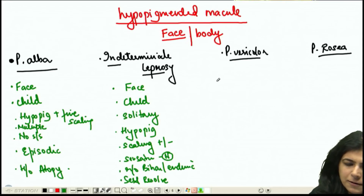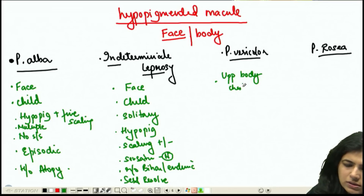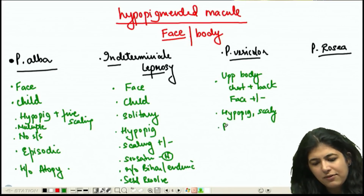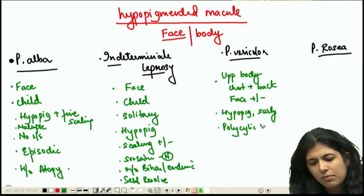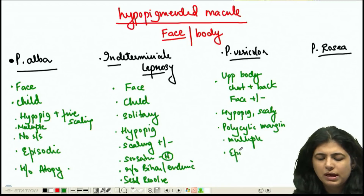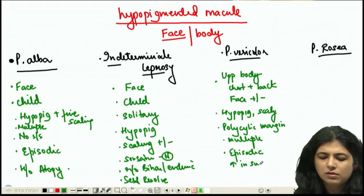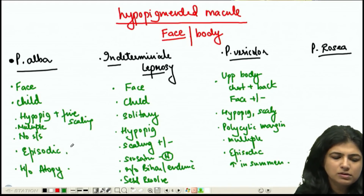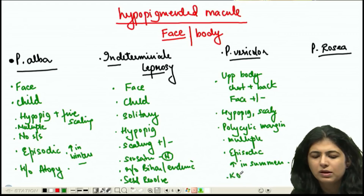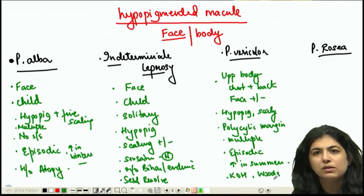Pityriasis versicolor will be predominantly on the upper body — chest and back — though the face may sometimes be involved. The lesions will again be hypopigmented and scaly, with more polycyclic margins. There will be multiple lesions, and these will also be episodic — increasing in summers. You will have a typical KOH appearance and Woods lamp appearance.